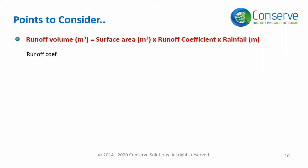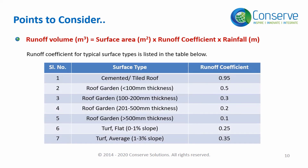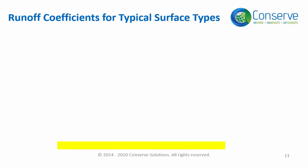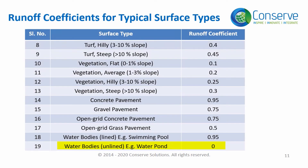Runoff coefficient for different surfaces is listed in the table. Hardscape surfaces like concrete tile surfaces have the highest runoff, that is 0.95. Water bodies like ponds or lakes will have a runoff of zero. Artificial water bodies like swimming pools, which have an impervious surface, will have a runoff equivalent to hardscape, that is 0.95.